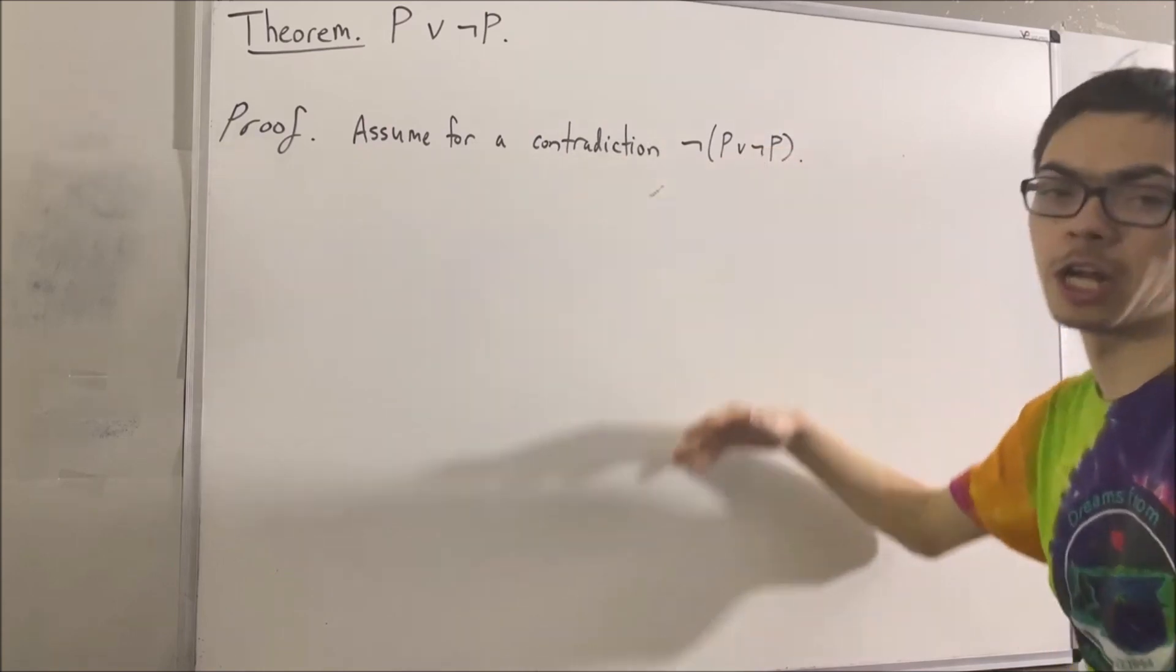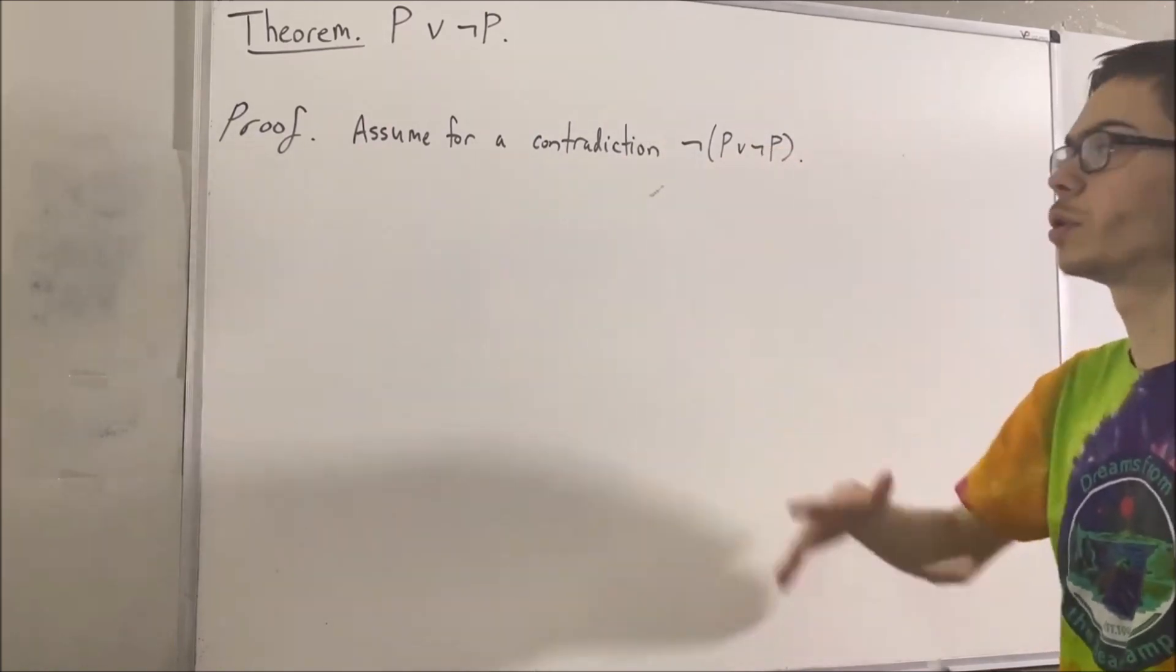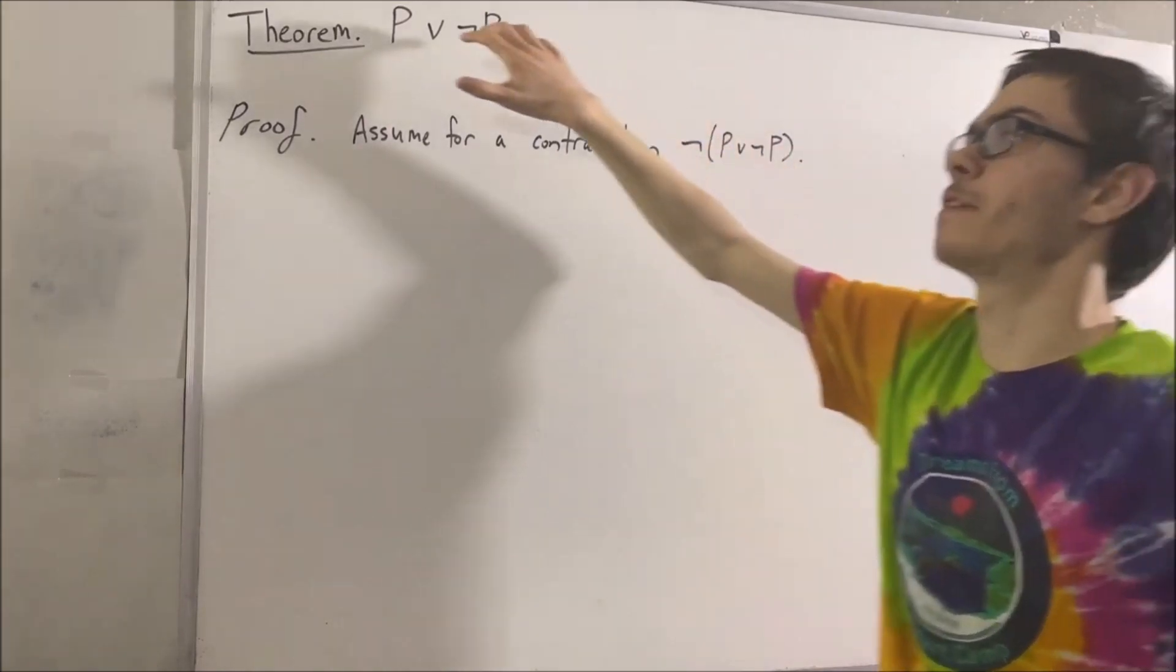If from this assumption we reach a contradiction, then we have to conclude that instead of this, we must have that this is true.